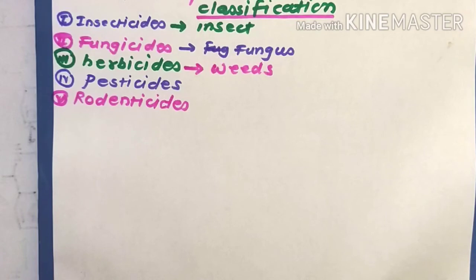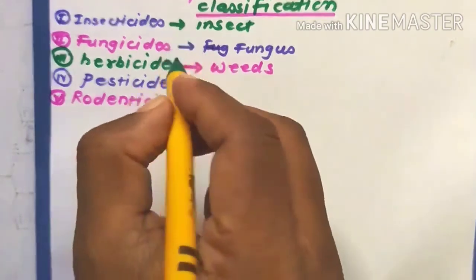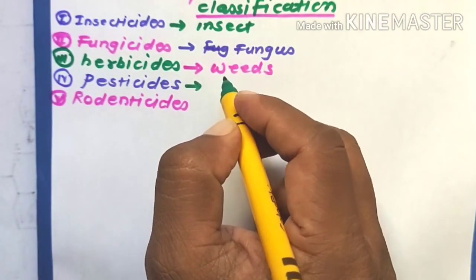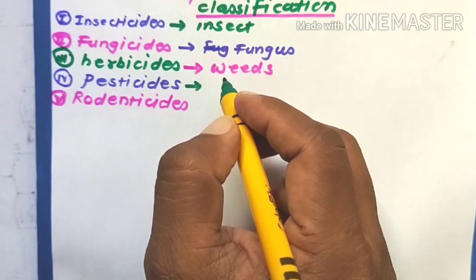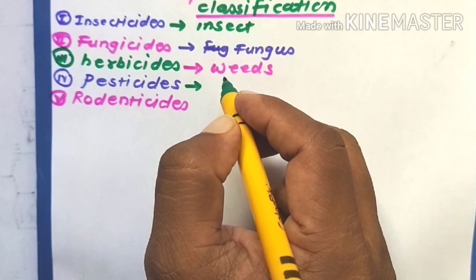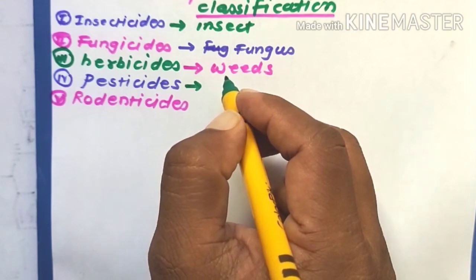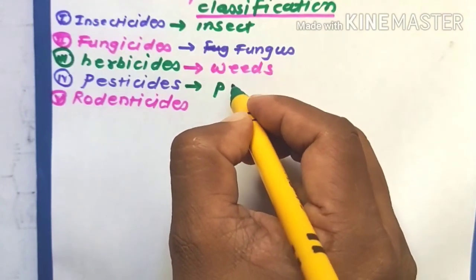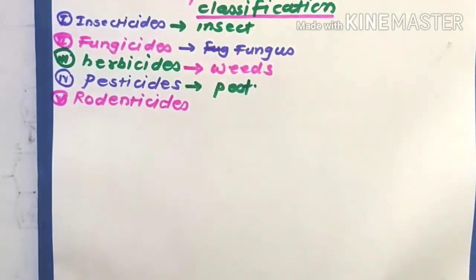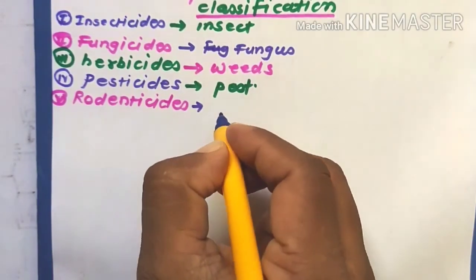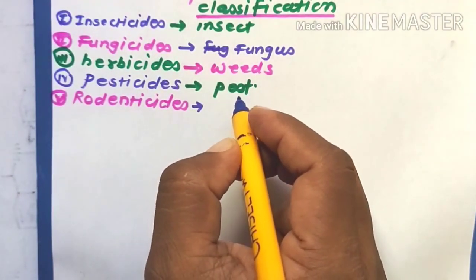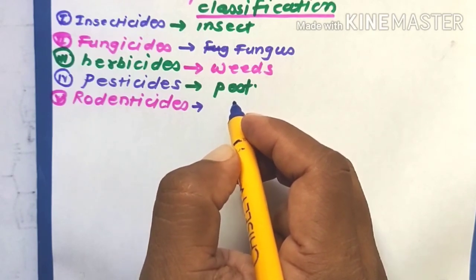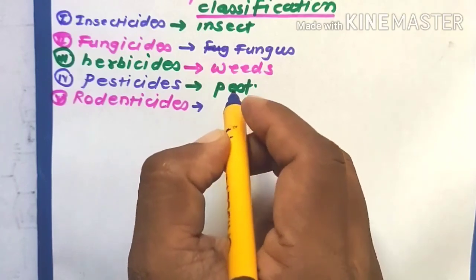The next one is pesticides — chemical components used to prevent, destroy, attract, repel, or control any pests, including unwanted species of plants or animals. The last one is rodenticide, which is used to prevent, inhibit, destroy, or kill rodents, that is mammals.